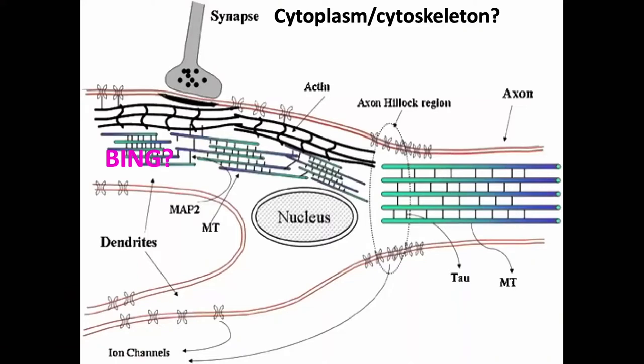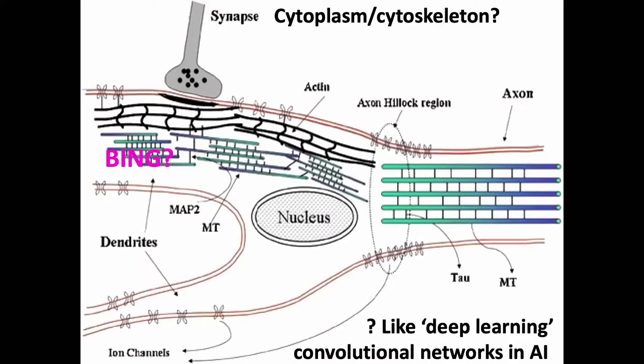The question then is: does consciousness happen at the synapse or at the membrane, as most people think, or does it come from the microtubules? This could also be analogous to deep learning convolutional networks in AI — but operating at a deeper level inside the neuron.